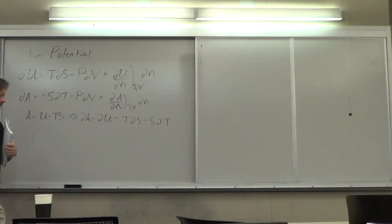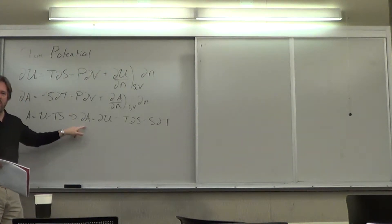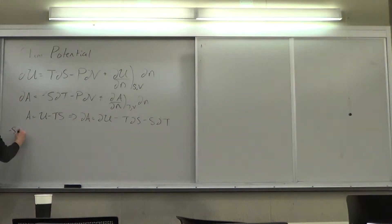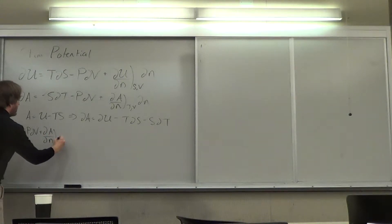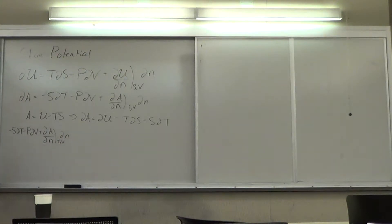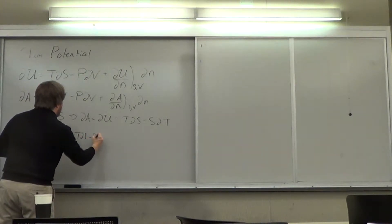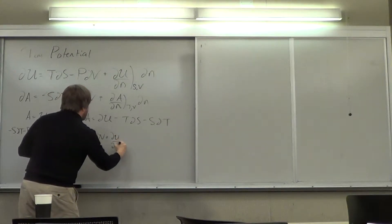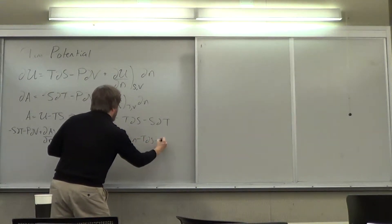So I have the change in A, and I'm going to write it out carefully. I'll substitute in the expression for dU: TdS minus PdV plus the chemical potential term (∂U/∂N at constant S and V) times dN, minus TdS minus SdT. The TdS terms cancel on both sides, so I'm left with: dA = -SdT - PdV + (∂A/∂N at constant T, V) dN.